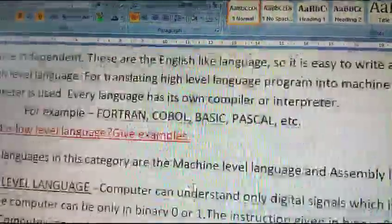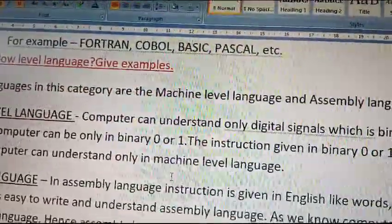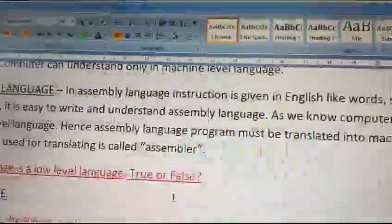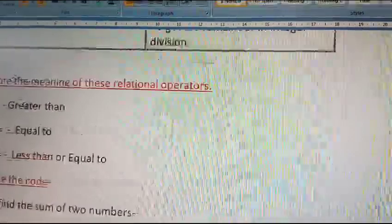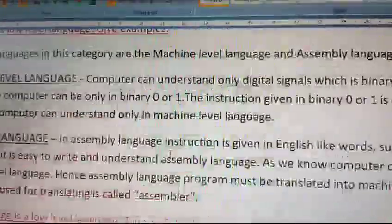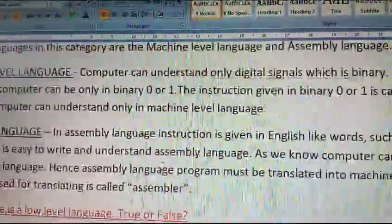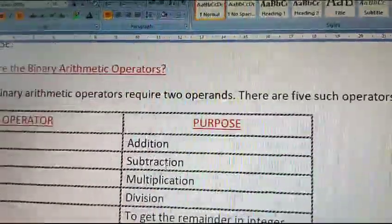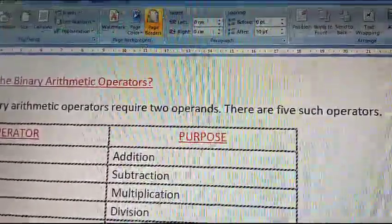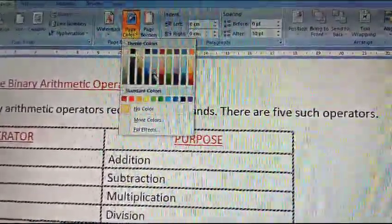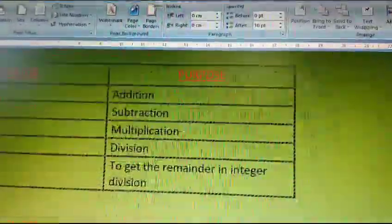And repeat, assembly language? Assembly language instructions are given in English-like words such as MOV, addition, subtraction, etc. It is easy to write and understand assembly language. As we know, computer can understand only machine level language. Hence, assembly language must be translated into machine language.